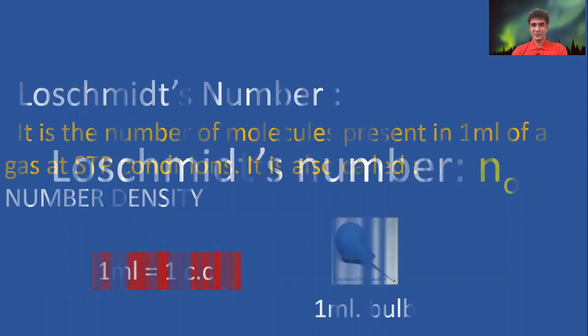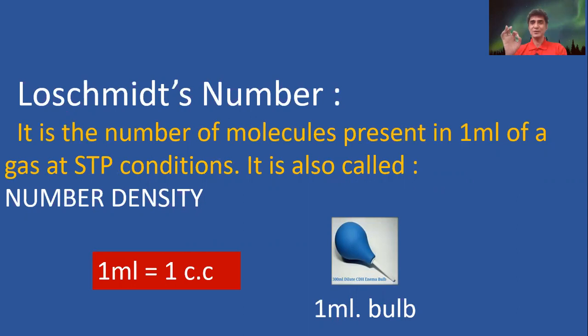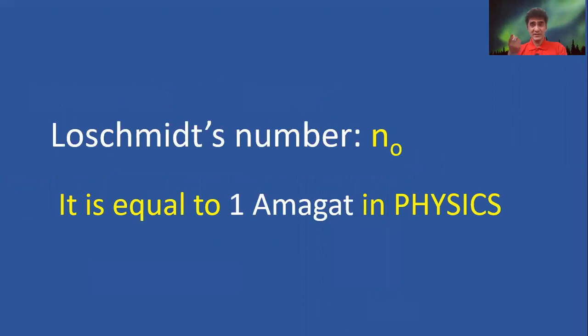Loschmidt's Number. What is Loschmidt's number? It is the number of molecules present in one ml of a gas at STP conditions. One ml means one cc. It is also called one amagat in physics.